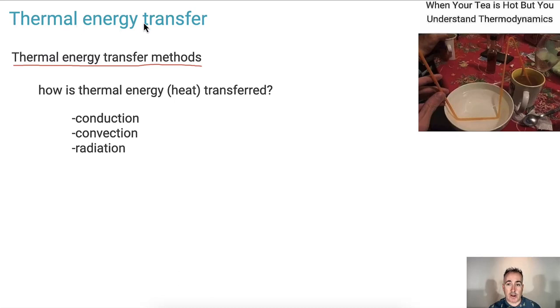In this video, we're going to be learning about how thermal energy is actually transferred. I like this one when your tea is hot but you understand thermodynamics. This would really work quite well. What do we talk about when we say thermal energy? Remember what thermal energy or heat actually means. This is Q, measured in joules. So when we say that heat is going to be transferred, thermal energy will go from one thing to another, from hot to cold. There's three main ways: conduction, convection, and radiation. Thermal just means transfer of heat.